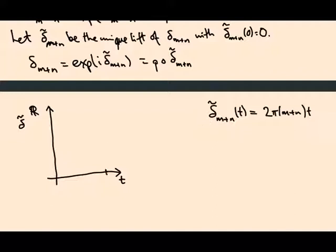Okay, so here's t equal 1, here's t equal 0, here's the height 2. So this is the height 2 pi m plus n. And in between the graph is just a straight line. This is the graph of delta tilde m plus n.